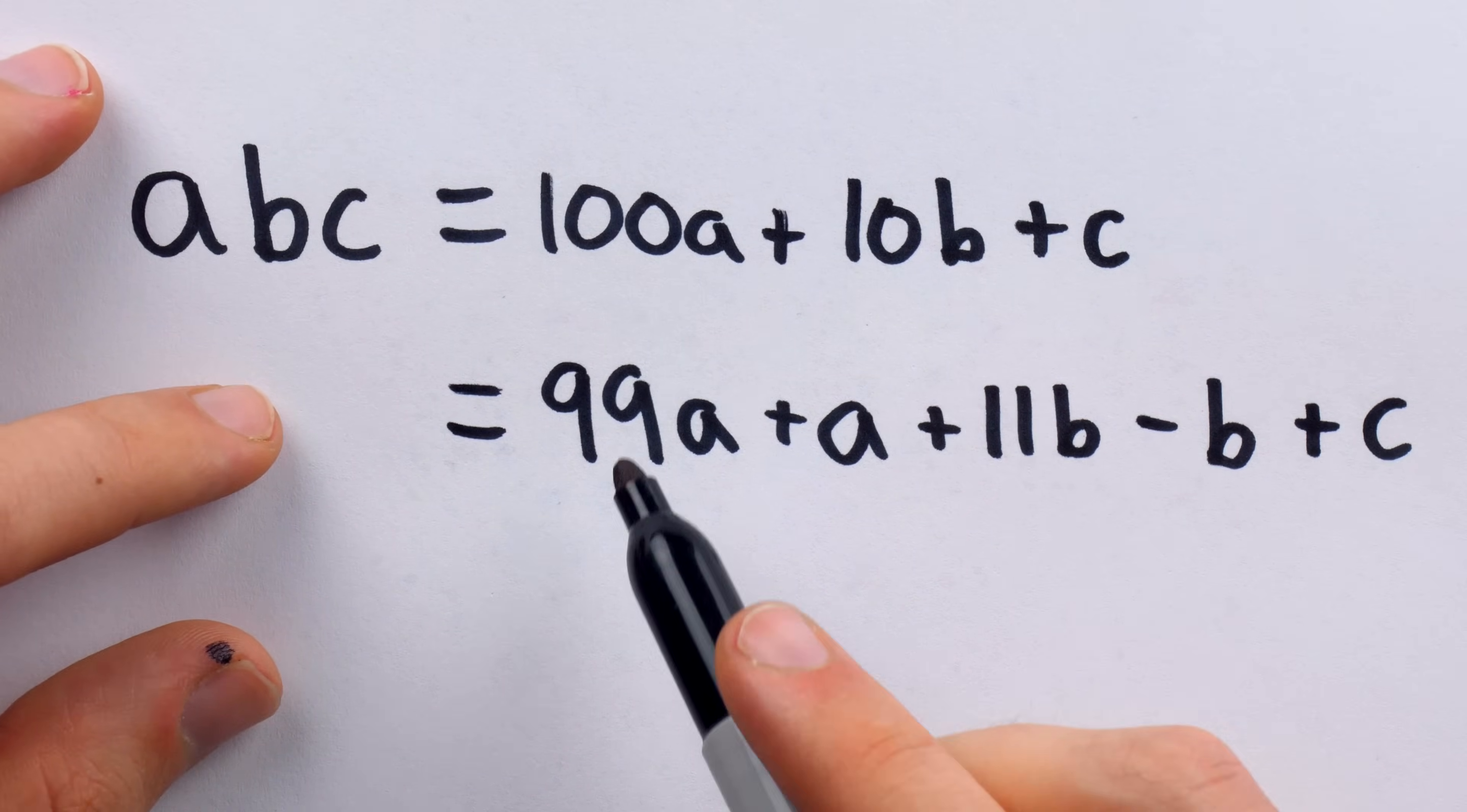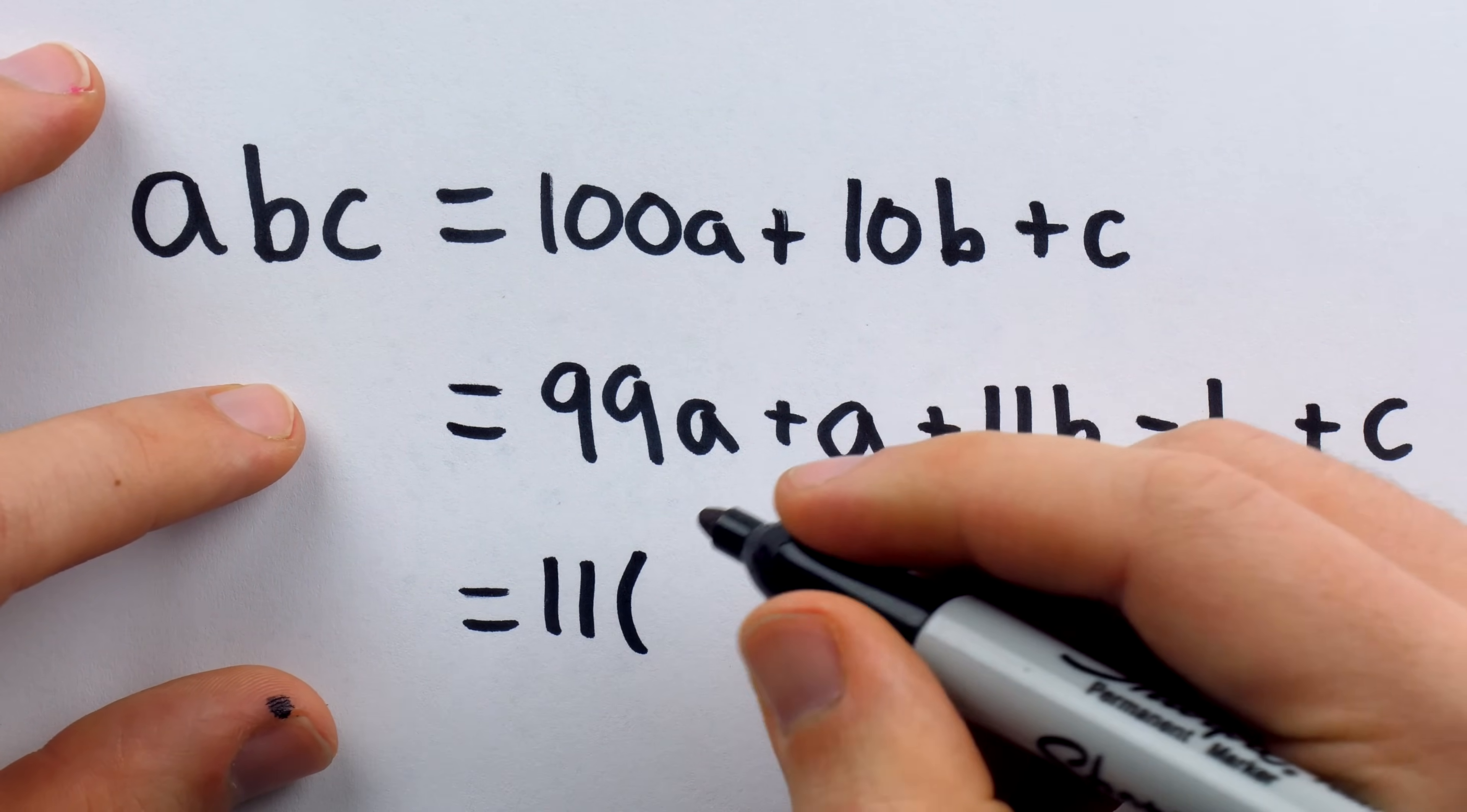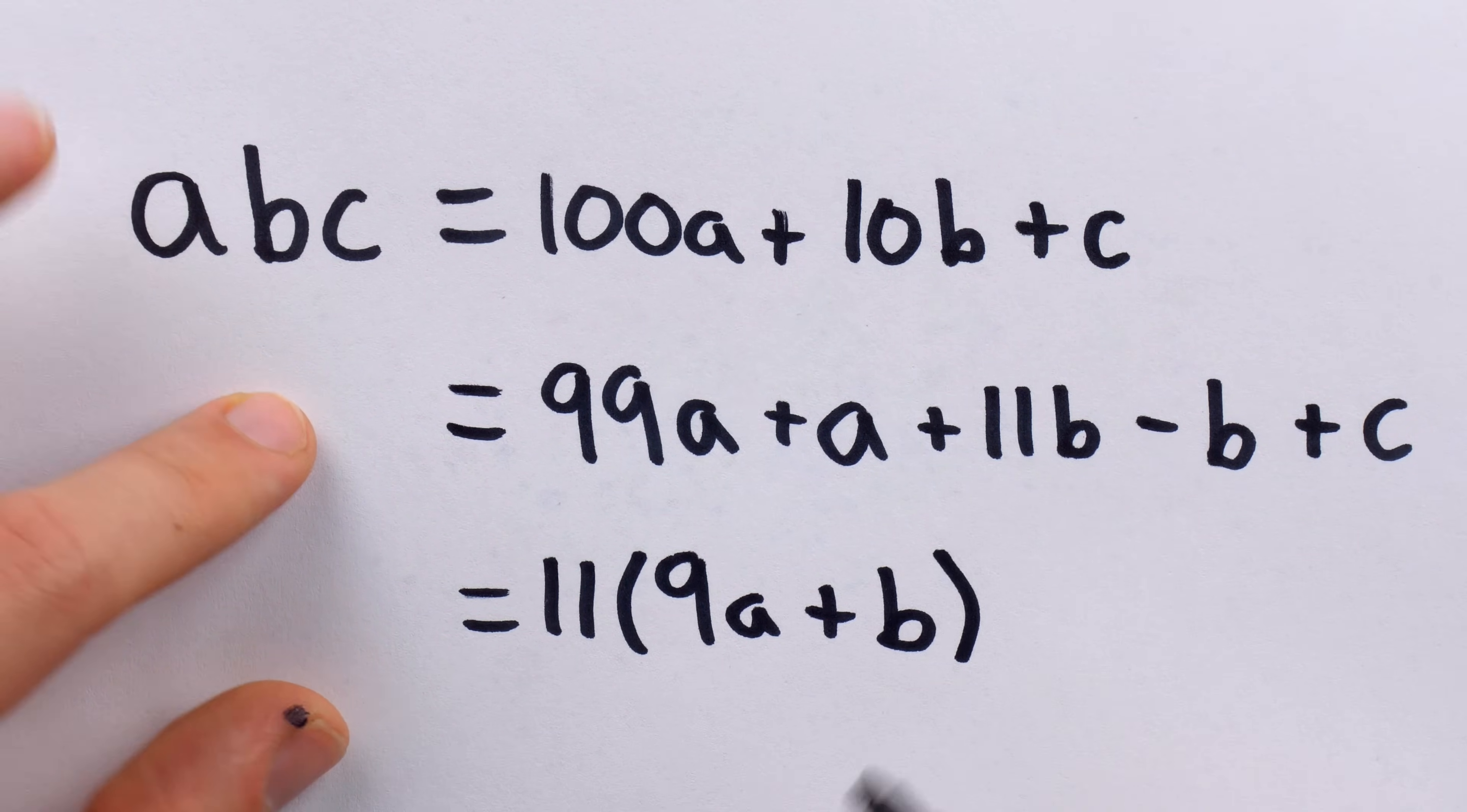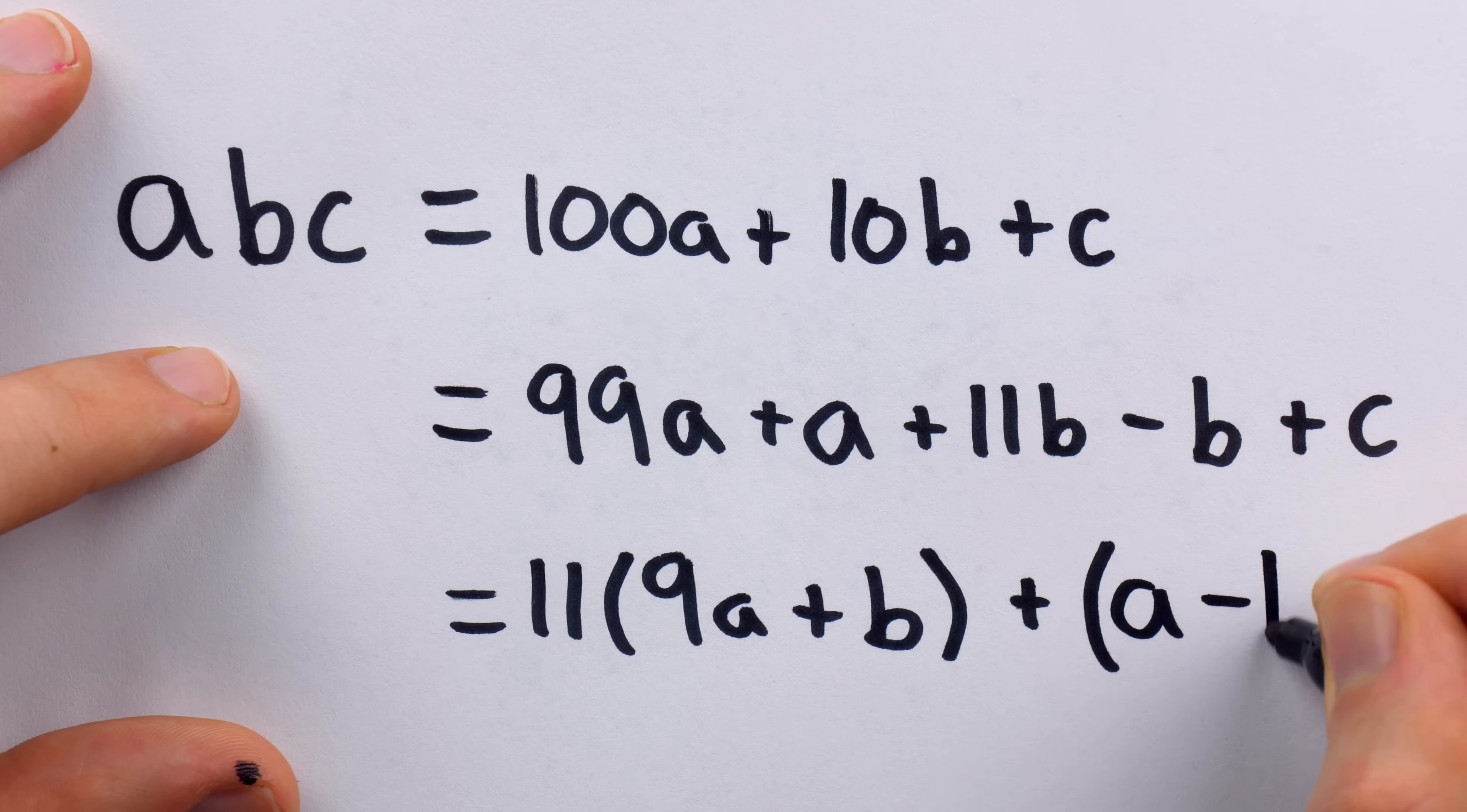Now, we can take an 11 out of these two terms and see what that's going to look like. This is going to be 11 multiplied by 9A plus B. So if we distribute the 11 through here, we would get those two terms. And what's left is the alternating sum of digits. A minus B plus C.